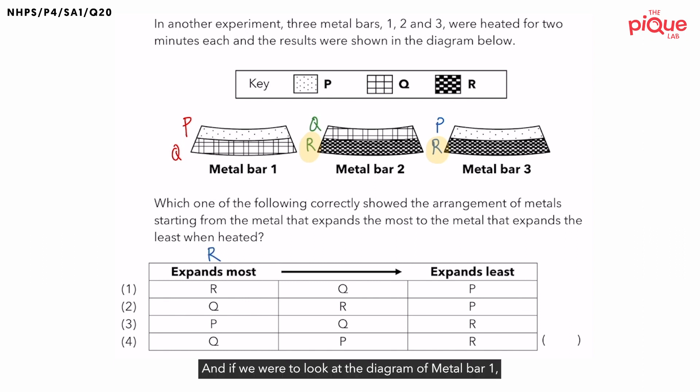And if we were to look at the diagram of metal bar one, we can see that metal Q expands more than metal P. This means that R must expand the most, followed by Q, and then P, which expands the least. Hence, the correct answer should be 1.